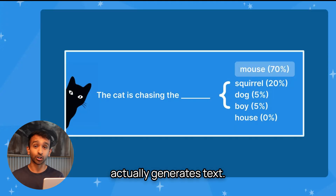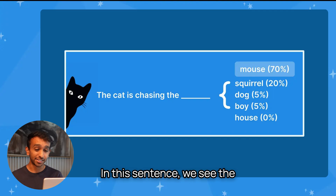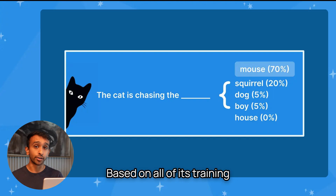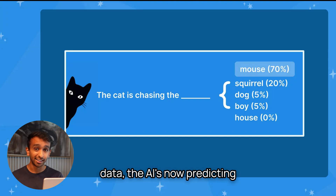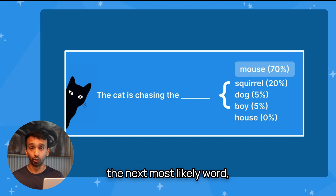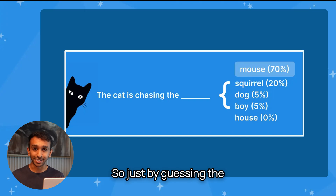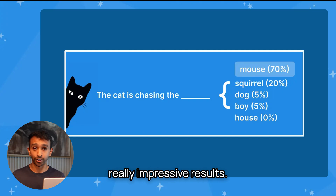Here's how a large language model actually generates text. In the sentence 'the cat is chasing the,' based on all of its training data, the AI predicts the next most likely word — in this case, 'mouse.' So just by guessing the next word or the next token, the AI can give really impressive results.